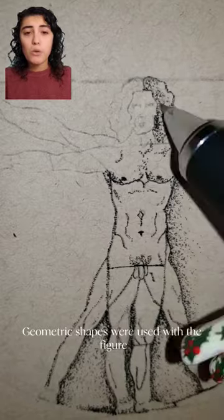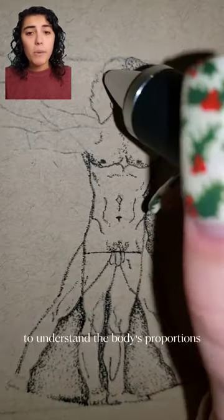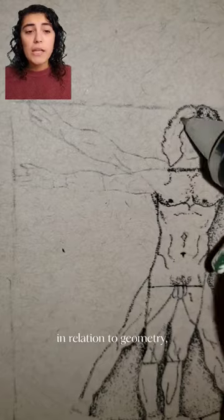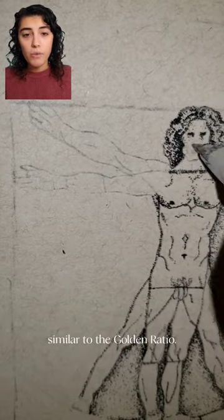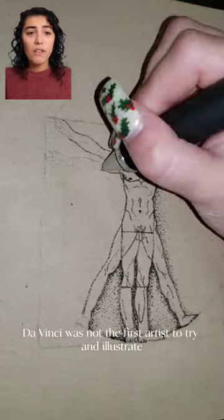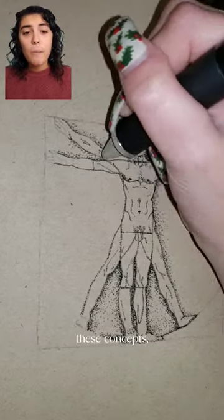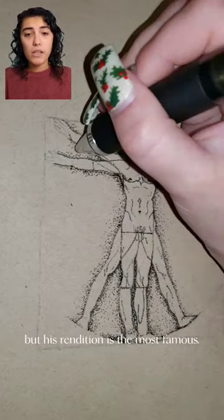Geometric shapes were used with the figure to understand the body's proportions in relation to geometry, similar to the golden ratio. Believe it or not, da Vinci was not the first artist to try and illustrate these concepts, but his rendition is the most famous.